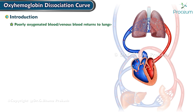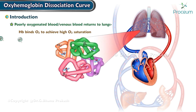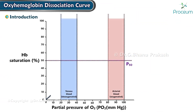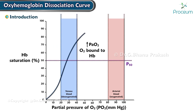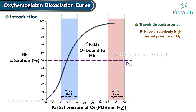The poorly oxygenated blood, or venous blood, returns to the lungs, where the hemoglobin readily binds oxygen to achieve a high oxygen saturation — going up the curve as the partial pressure of oxygen increases. As it travels through arteries that have a relatively high partial pressure of oxygen, the vast majority of oxygen remains bound — the flat part of the curve — allowing for transport of oxygen in the arterial system.